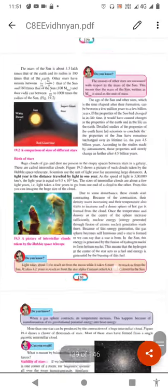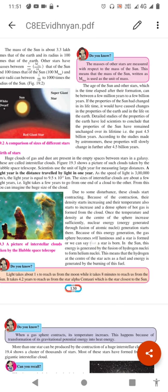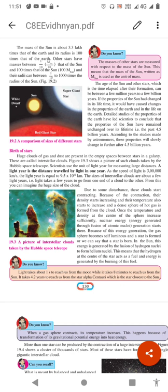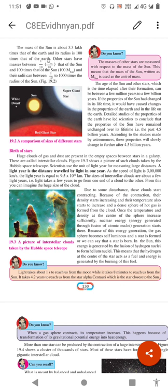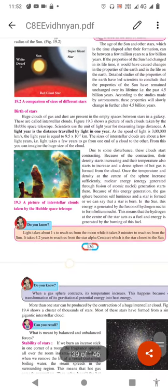Scientists use the unit of light year. A light year is the distance traveled by light in one year. The speed of light is 3 crore kilometers per second, so one light year equals 9.5 × 10^12 kilometers. The size of interstellar clouds are about a few light years. Light takes a few years to go from one end of the cloud to another. From this you can imagine the huge size of clouds.